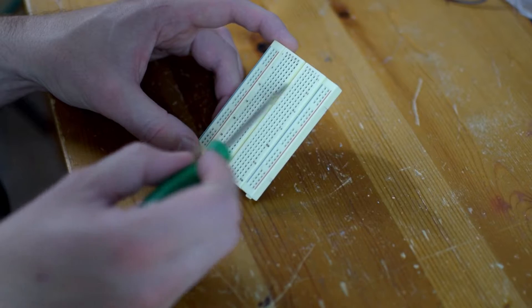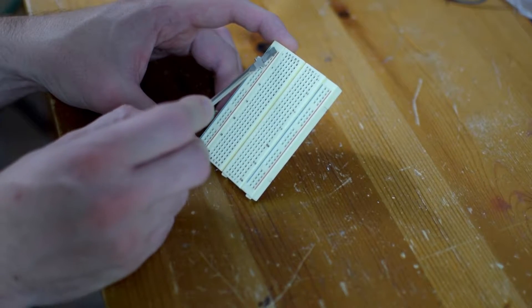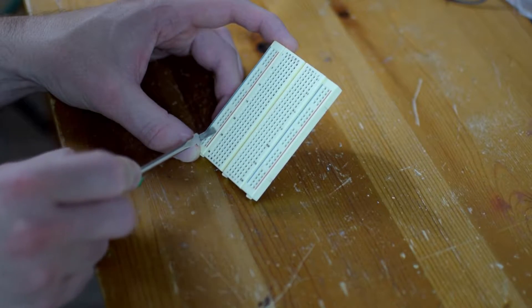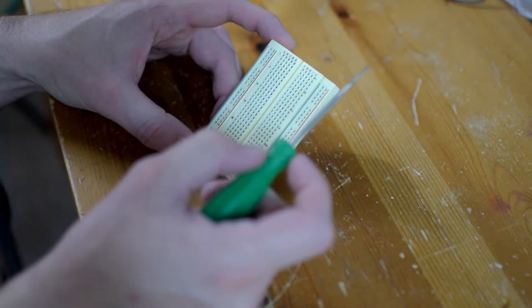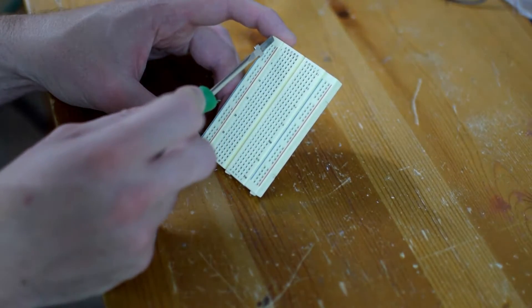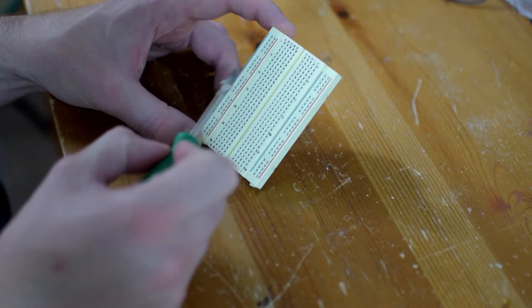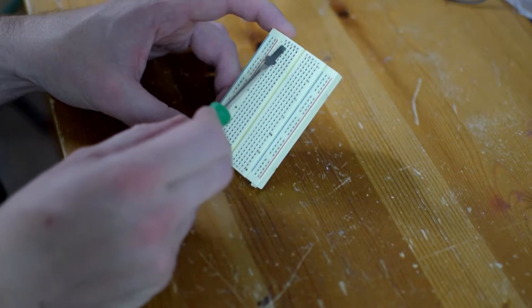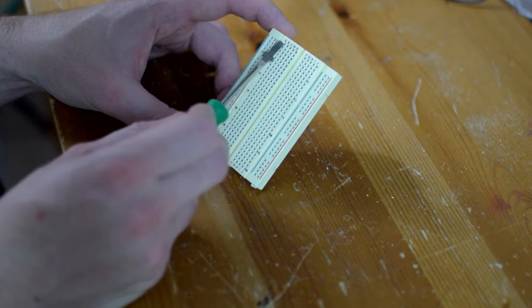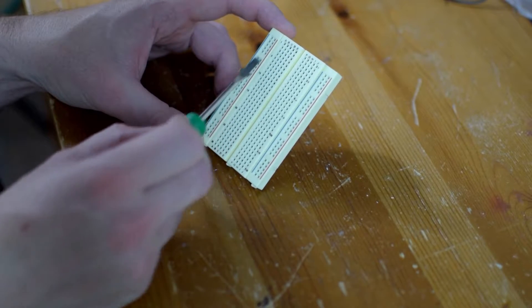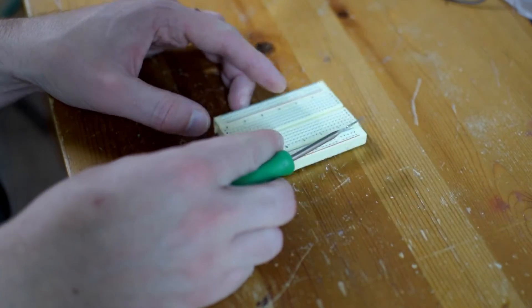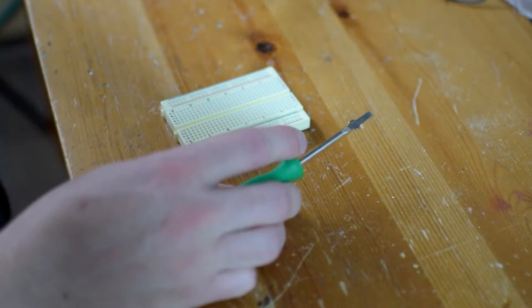And then we've got two power rails here on the outside. The red is all connected vertically, so that's going to be like your 9-volt power supply, the positive side, and the blue is going to be your ground. So these ABCD columns and rows connect horizontally, whereas these connect vertically. So yeah, let's go ahead and get started.